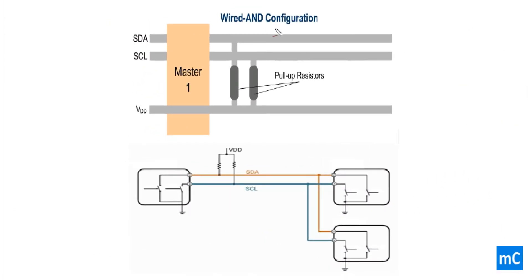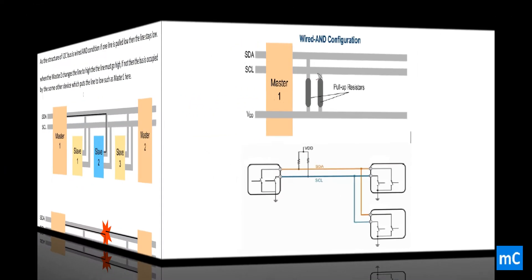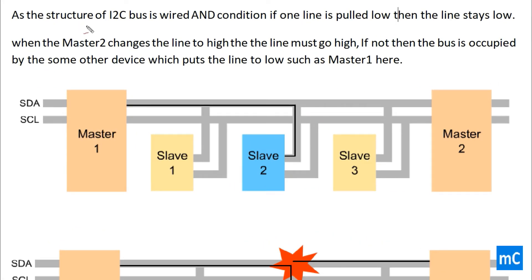This is the wired-AND configuration of the I2C bus. As the structure of the I2C bus is wired-AND conditioned, if one line is pulled low, then the line will stay low. When Master 2 changes the line to high, then the line must go high. If not, then the bus is occupied by some other device which puts the line low, such as Master 1 here.